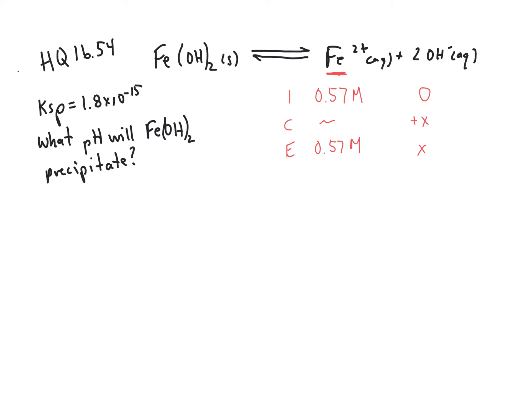Our Ksp expression would be our concentration of Fe²⁺ times our concentration of OH⁻ squared. We know our Ksp, that's 1.8 times 10 to the minus 15. Concentration of iron is 0.57, and our concentration of hydroxide is x squared. So we're going to take our Ksp, 1.8 times 10 to the minus 15, divide that by our concentration, 0.57...